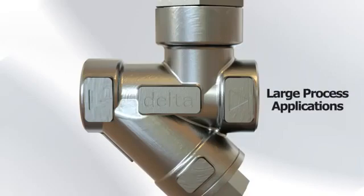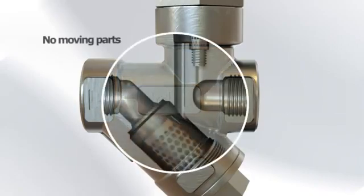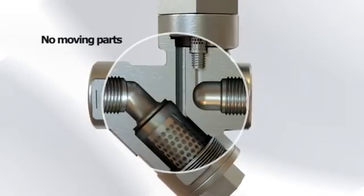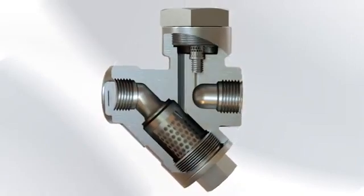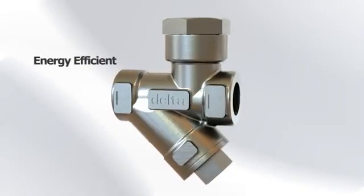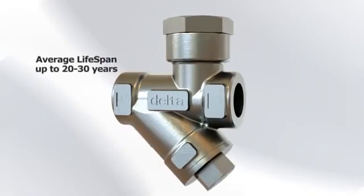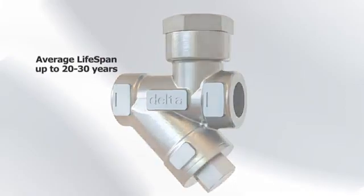Unlike conventional mechanical type steam traps, Delta Venturi Orifice Steam Traps have no moving parts that can break or get damaged, and are still able to outperform conventional steam traps in lifespan and energy efficiency. The Delta range of steam traps have a lifespan in excess of 20 to 30 years, far outperforming any mechanical steam trap by many years.